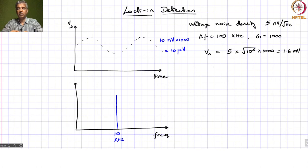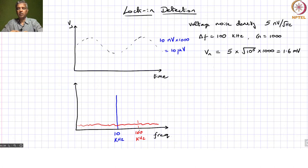Now the signal voltage is 10 microvolts and the noise voltage is 1.6 millivolts — much larger than the signal. The noise is essentially broadband. For a case where we are trying to pick up a particular tone at 10 kilohertz, we do not necessarily need all that bandwidth from the amplifier.